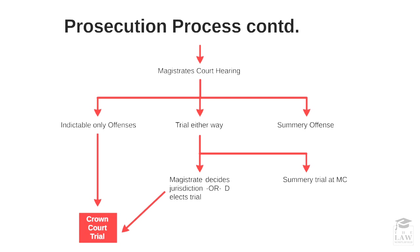At this point, the case is forwarded to the Magistrate's Court for hearing. Based on a prima facie case, it is either an indictable only offence — in which case it is directly forwarded to the Crown Court for trial — or it is a triable either way or summary offence. Where it is triable either way, either the Magistrate decides on the jurisdiction or the defendant elects for a trial, and it will proceed to the Crown Court. If the charge is not as serious, then there will be a summary trial at the Magistrate's Court itself.